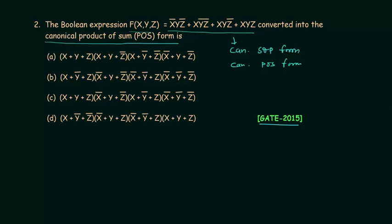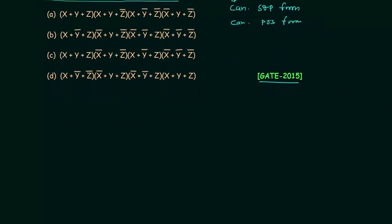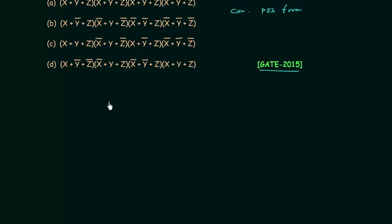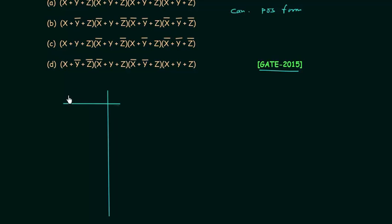It will be very easy to find the canonical POS form if we first make the truth table using the canonical SOP form. Once we have the truth table, we can easily obtain the canonical POS form. We have three variables, so I will make the truth table for x, y, and z. The output is f. With three variables there are eight possible combinations.